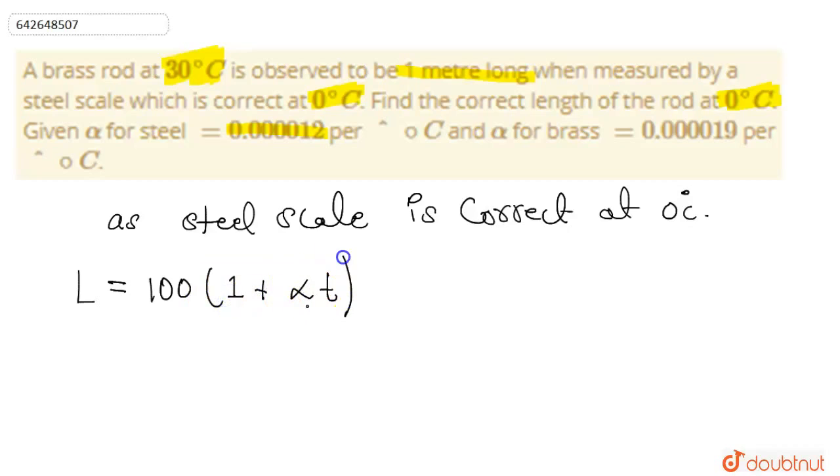In this case we are going to use alpha, we will use alpha for steel. So L will be 100(1 + 0.000012, that is 12 × 10^-6.